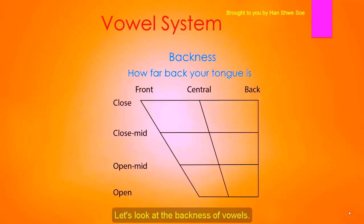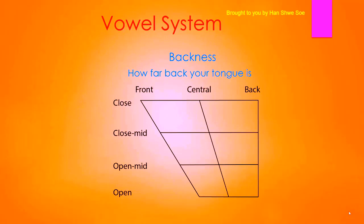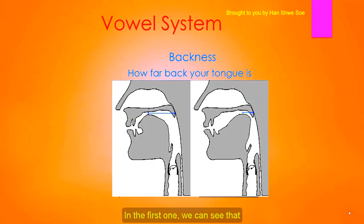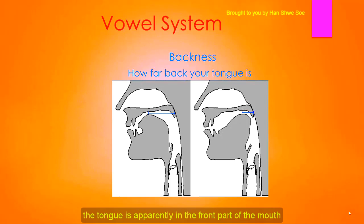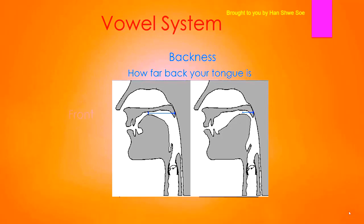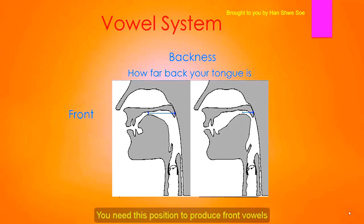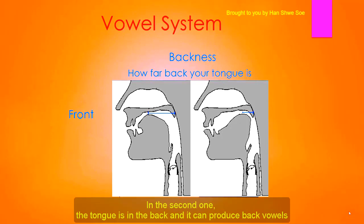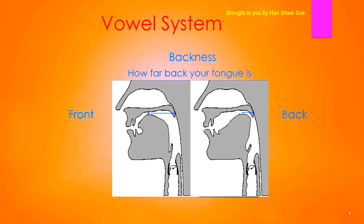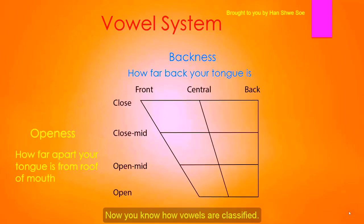Let's look at the backness of vowels — that means how far back your tongue is in your mouth. In the first position, the tongue is in the front part of the mouth; you need this position to produce front vowels. In the second position, the tongue is in the back, and it produces back vowels. Now you know how vowels are classified.